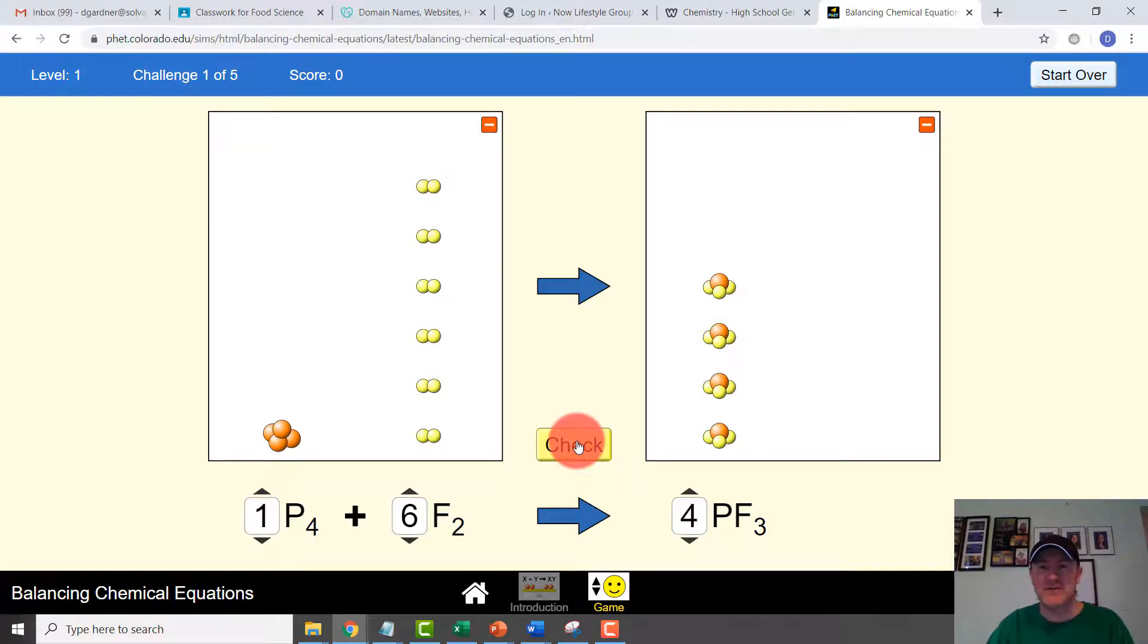But I want to show you what you're going to see first if you were wrong versus if you're right. And so if we do our math right now, I have four Ps here. If I look at this, four times one is four Ps. So that's good. Six times two would be 12 Fs. And four times three would be 12 Fs. So I know it's balanced, but I'm going to get rid of one and just show you what happens.